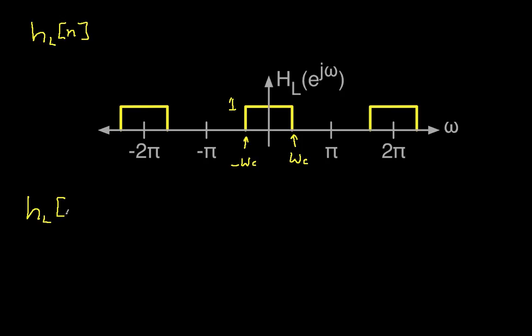So we can write HL of n as the inverse transform, which is 1 over 2 pi, the integral over an arbitrary interval of 2 pi, HL e to the j omega times e to the j omega n d omega. This integral can be computed over any interval of length 2 pi.